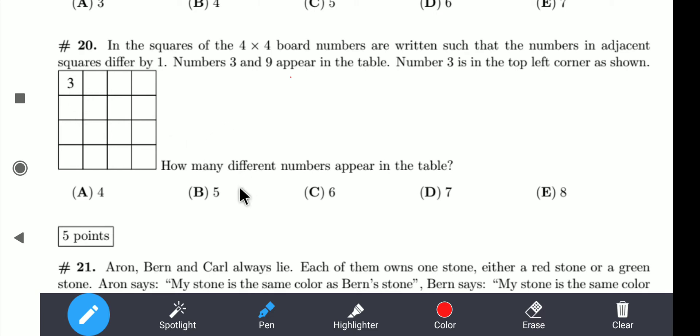So we have a 3 here and how many different numbers appear in the table. So we have option A which is 4, B which is 5, C is 6, D is 7, and E is 8.